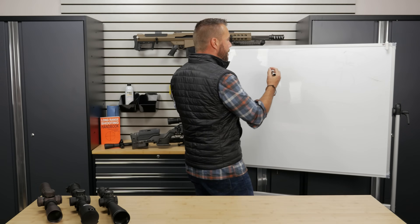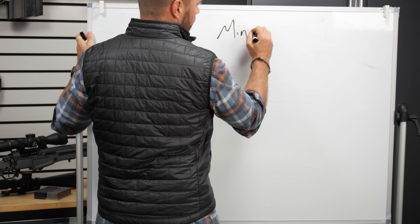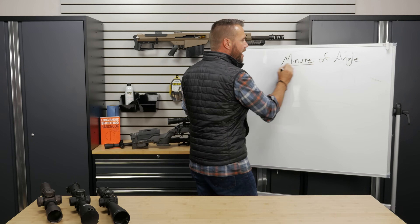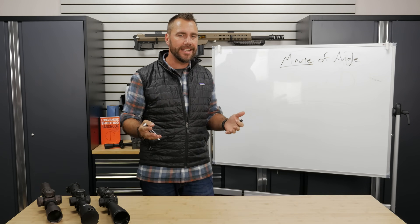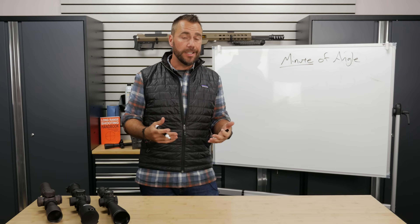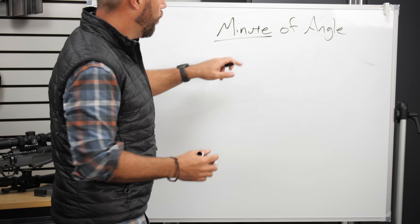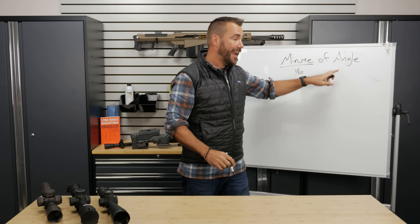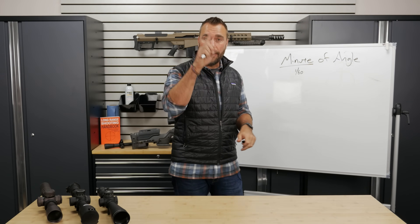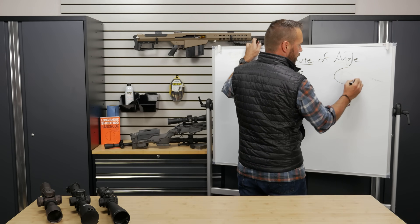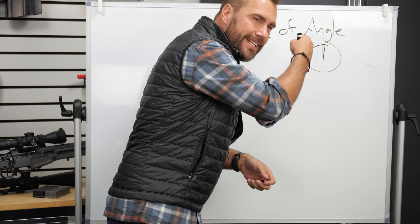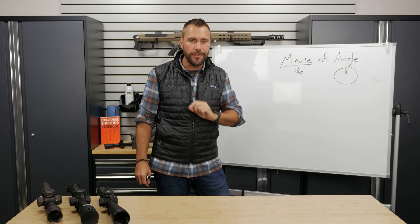First, to understand what a minute of angle is, let's look at the phrase itself. The word 'minute' here refers to one-sixtieth of something. Think of one minute of an hour — it's one-sixtieth of an hour. Same thing here: one minute is one-sixtieth of some angle. That angle is one degree in a 360-degree circle. So imagine a 360-degree circle, take one of those degrees and divide it into 60 little chunks. One of those is one minute of angle.